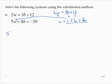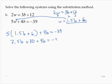Yielding 5 times (1.5b plus 6) plus 4b equals negative 39. Applying the distributive property, 7.5b plus 30 plus 4b equals negative 39.